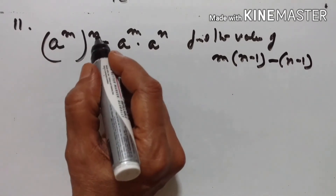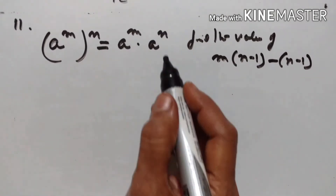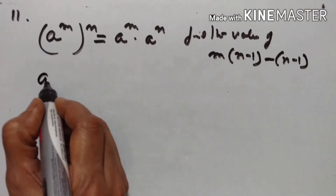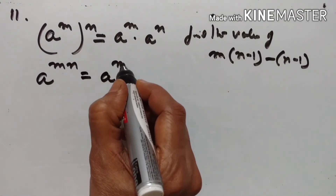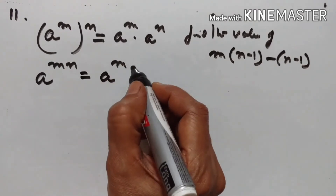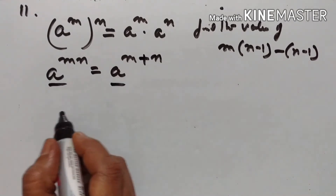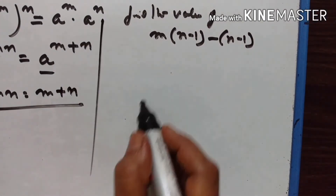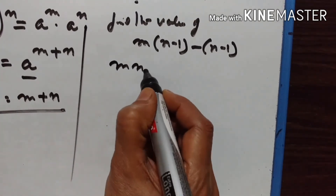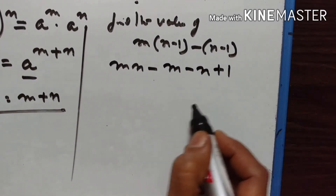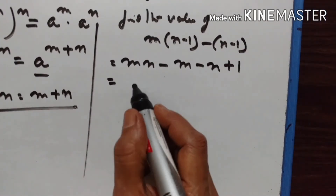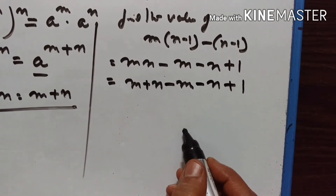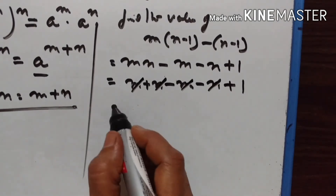Problem 11: a raised to the power of x raised to the power of n equals a raised to the power of m into a raised to the power of n. We have to find the value of mn minus m minus n plus 1. Since the base is the same we can add the powers by the first law, so mn equals m plus n. Substituting: m plus n minus m minus n plus 1. m minus m is 0, n minus n is 0, so the value equals 1.